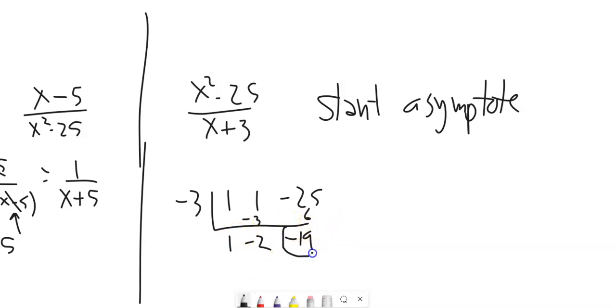And so notice we have this remainder, right? After we've done this division, this is the same as X minus 2 plus, I'll say minus because it's a negative 19, minus 19 over X plus 3. These are equivalent to each other.